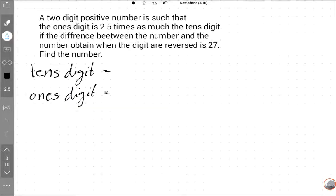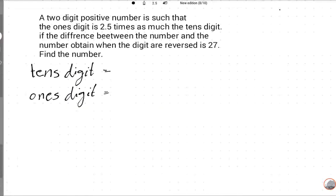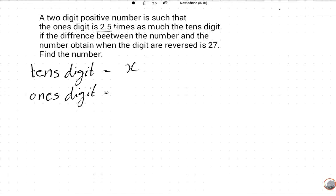Now we will start properly. A two-digit positive number is such that the ones digit is 2.5 times the tens digit. So we will suppose the tens digit is x, and the ones digit is 2.5 times of the tens digit, that is 2.5x.